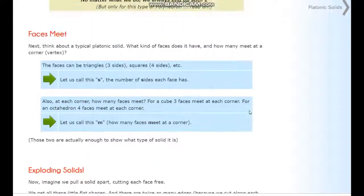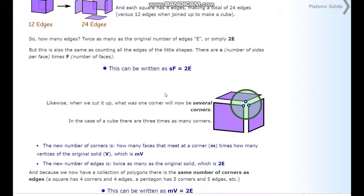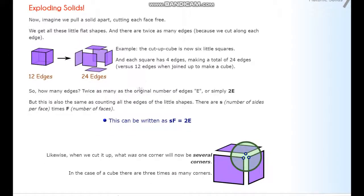Now let's get into the actual proof. Let S denote the number of sides per face. For a cube, S would be four. When you count all the edges face by face — one face gives four edges, two faces give eight, and so on — you're counting each edge twice, once for each adjacent face. So the first result is: S times F equals two times E.